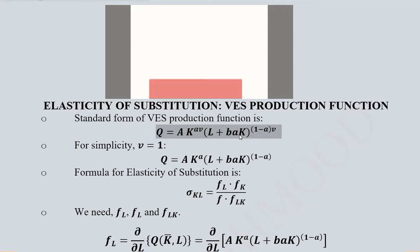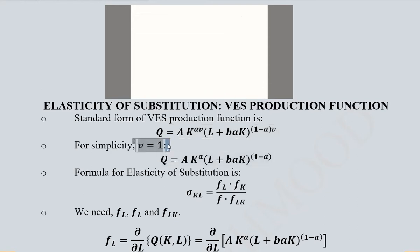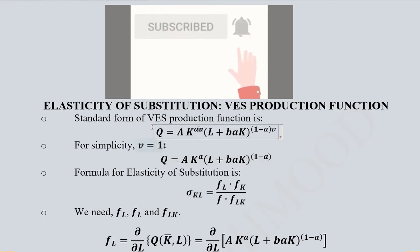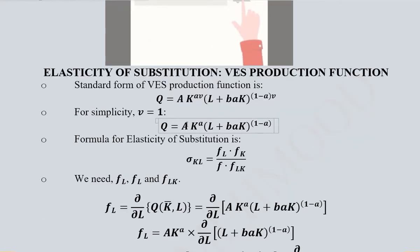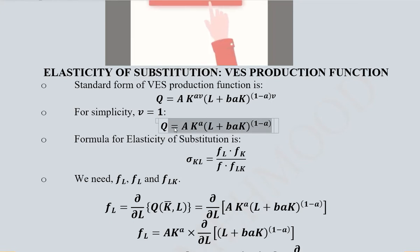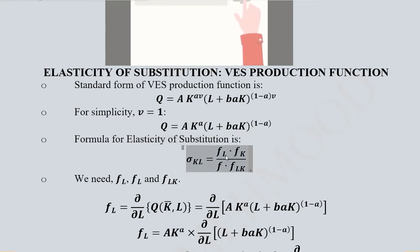This is the VES production function that we studied in the last video. For the sake of simplicity, we start with the assumption of CRS — that is, constant returns to scale — which implies that instead of V we can write 1. With this substitution, 1 disappears from the product and we get this simplified form of the VES production function.